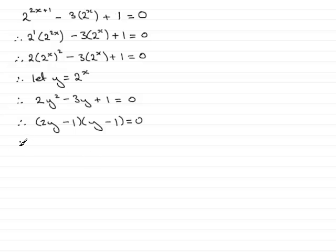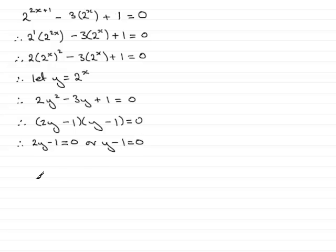So what that means is that each of the factors equals 0: so 2y minus 1 equals 0, or y minus 1 equals 0. This leads on to y equaling a half, or y equaling 1.